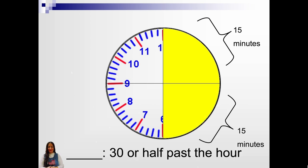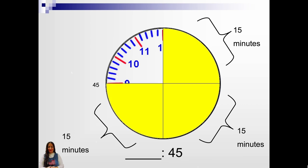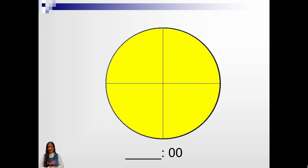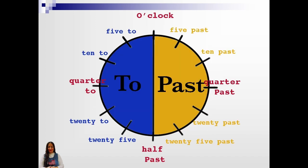15, 30. 15 and 15 is 30. 30 or half past the hour. 15 minutes and 15 minutes and 15 minutes is 45 minutes. Now when it's complete, it's at the o'clock.